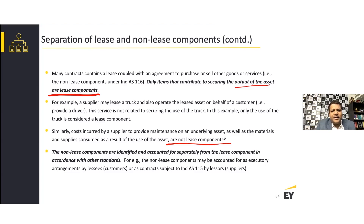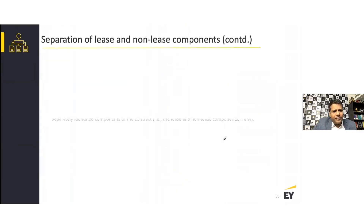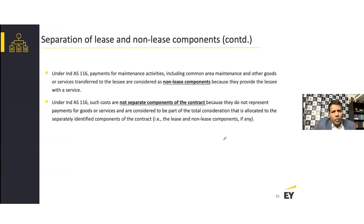Non-lease components are identified and accounted for separately from the lease component in accordance with other standards. For example, the non-lease component may be accounted for as an executory arrangement by the lessee. Under INDAS 116, payments for maintenance activities including common area maintenance and other goods or services transferred to the lessee are considered non-lease components — they provide the lessee with a service and are not essential to the use of the asset itself.